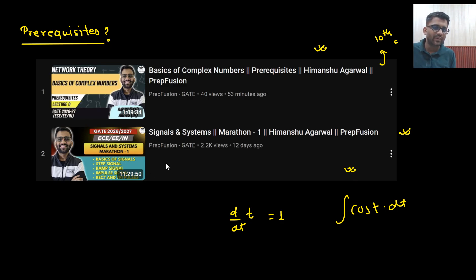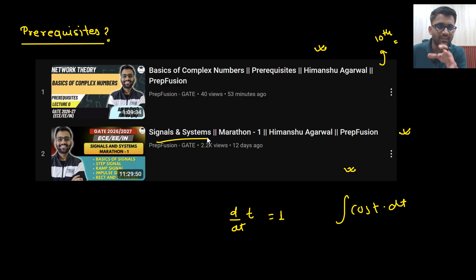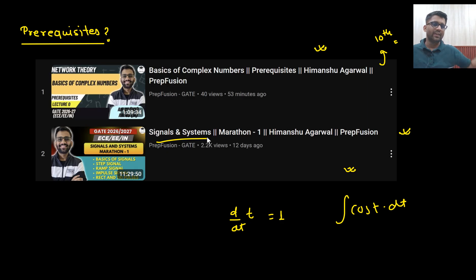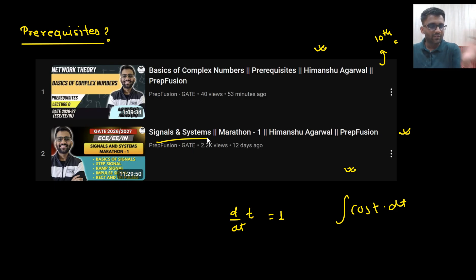This prerequisite video is roughly around 11.5 hours and covers signal system basics as well. If you are covering network analysis and you have a basic idea of signal system functions — like step function, impulse function, ramp function, how to make a waveform, and how to calculate the area — you will be much more comfortable in the network analysis playlist. These topics will also be covered within the playlist, but covering them beforehand helps.